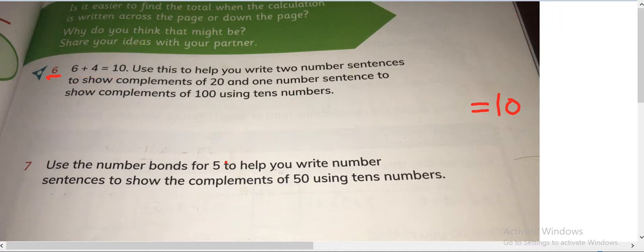Let me explain you what is number bond. Number bond is anything which makes 5. 1 plus 4 is equals to 5.